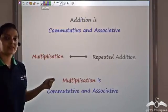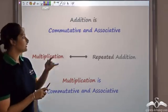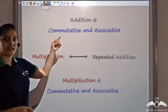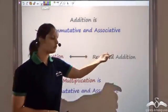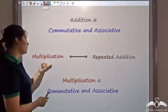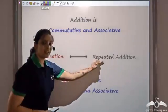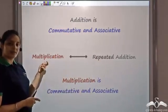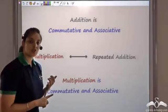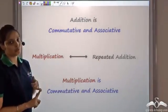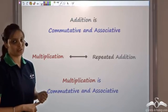So we have seen that addition is commutative and addition is associative. Repeated addition gives multiplication, and multiplication too is both commutative and associative.